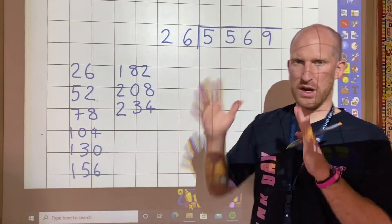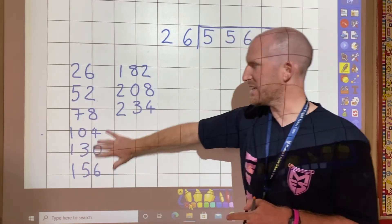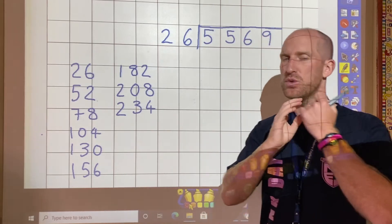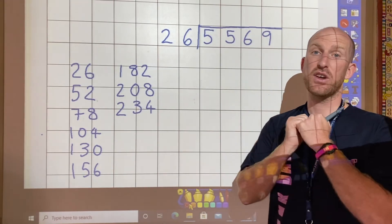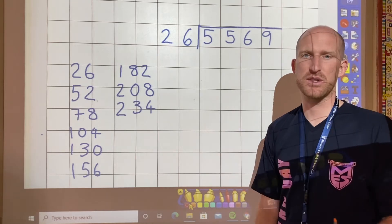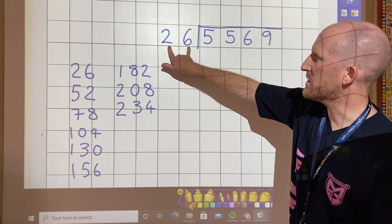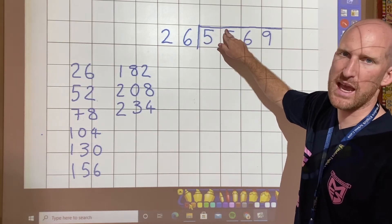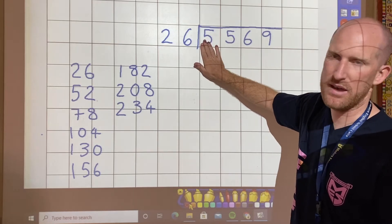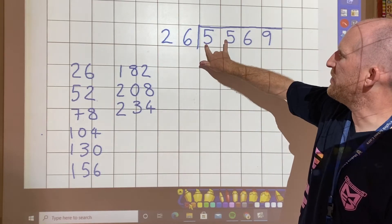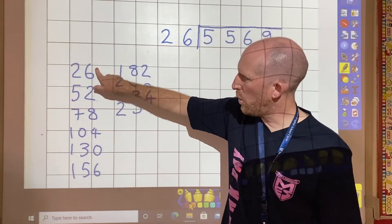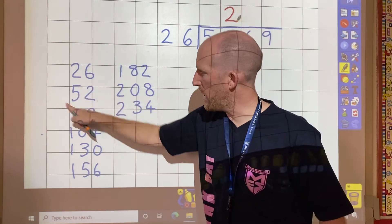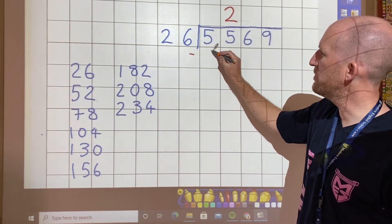So before I've started the question, what I've done is I've done the 26 times table already. This took me quite a while, but if you don't get it right, you will not get the answer correct, no matter how good everything else is. So how many 26s are in five? I can't do it. Now I'm not going to cross it out and carry it in long division. I'm just going to keep it there. How many 26s in 55? One, two. Okay? And then I'm going to take away two 26s, which is 52.